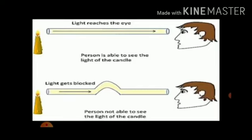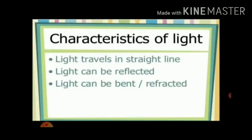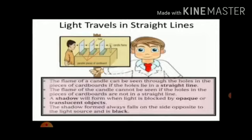So all these activities can prove that light travels in a straight line, and this is called linear propagation of light. Now, characteristics of light: light travels in straight lines, light can be reflected, light can be bent and refracted.